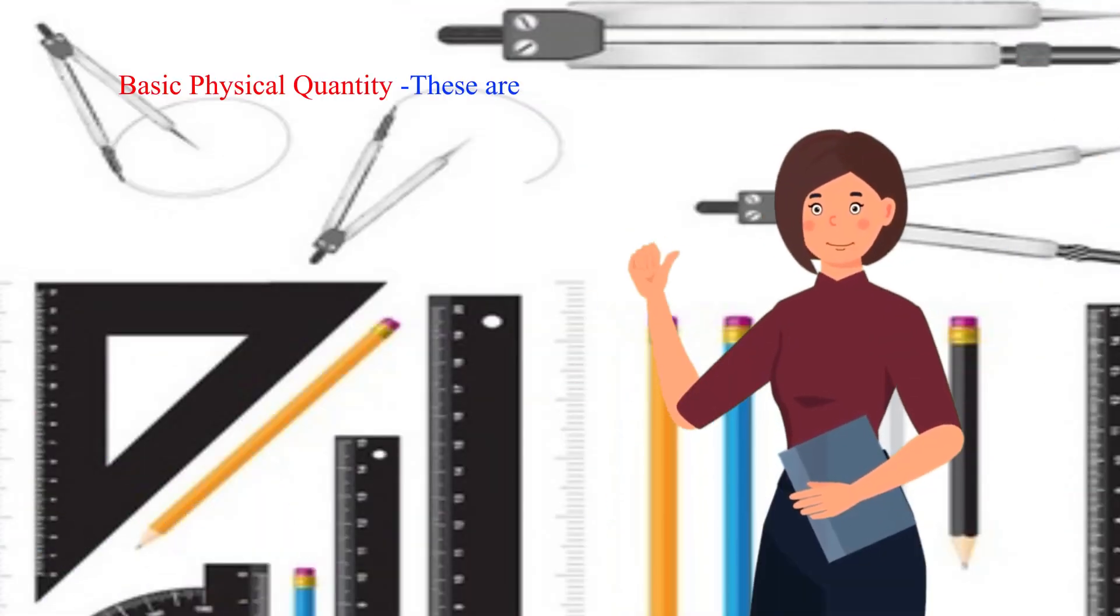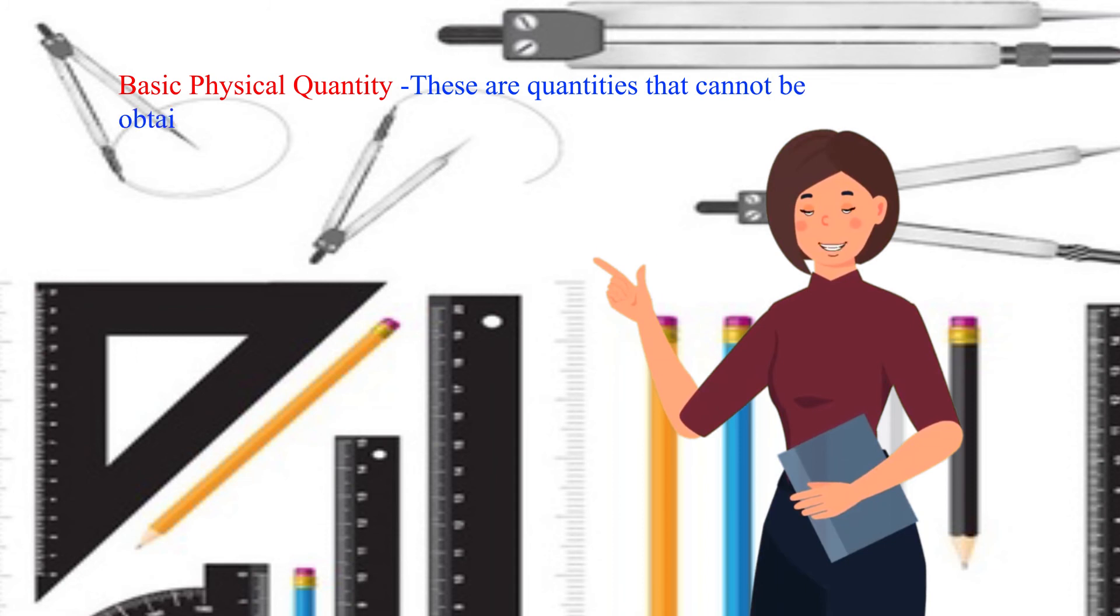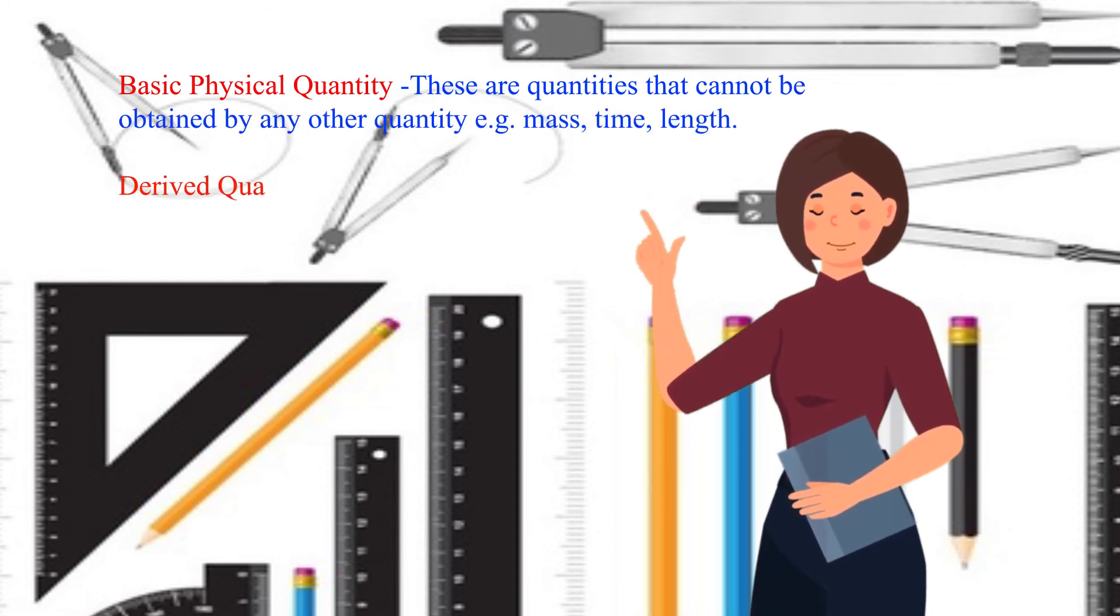Basic physical quantity: These are quantities that cannot be obtained by any other quantity, e.g. mass, time, length.